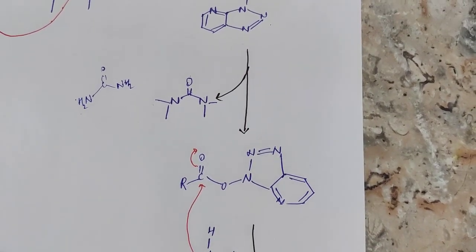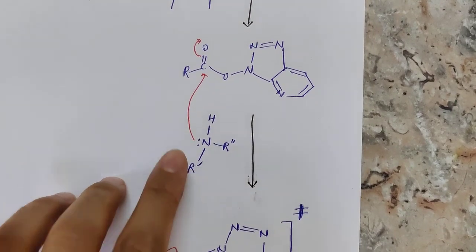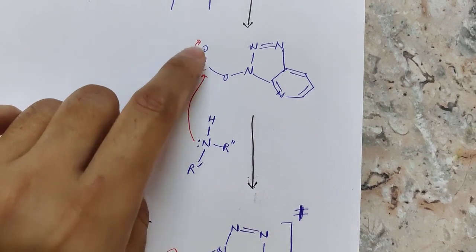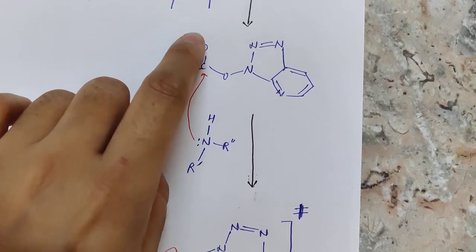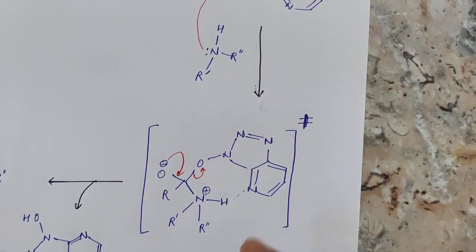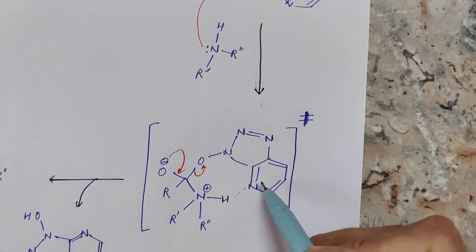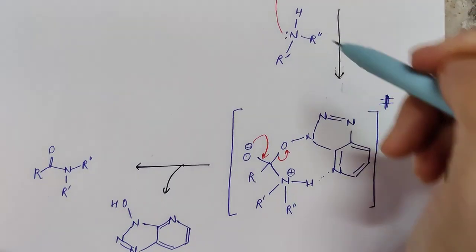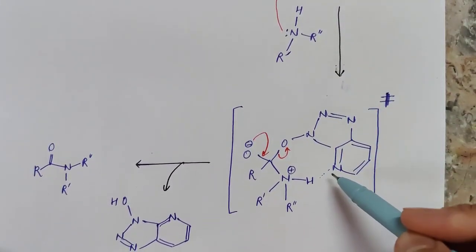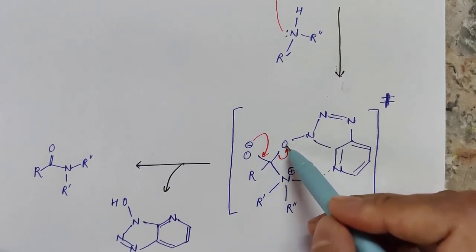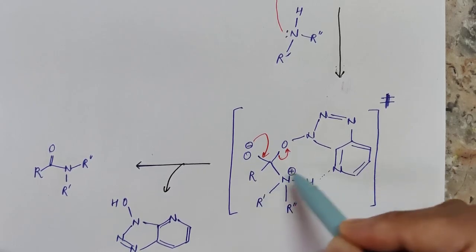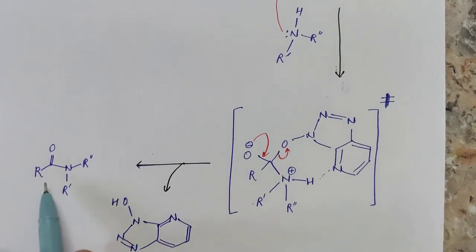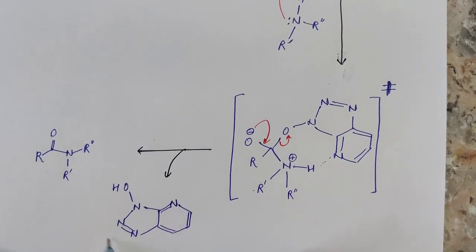In the presence of the base taken along with BOP, the base attacks the carbonyl carbon, the double bond cleaves, and the oxygen gains a negative charge. An intermediate forms, supported by a hydrogen bond if the amine is secondary (not tertiary). Finally, this bond cleaves and the amine group reacts with the carboxylic part to form the amide bond, while the benzotriazole-based reagent is removed. This completes the BOP mechanism.